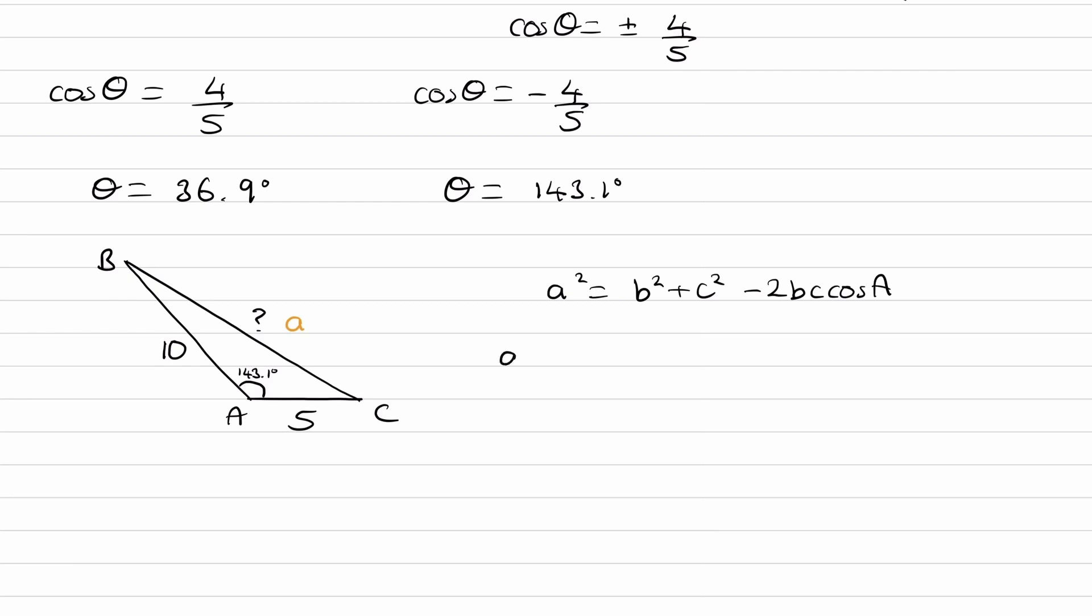Putting everything in: b squared is 5 squared plus c squared, 10 squared, minus 2 lots of 5 times 10 times cos a. Cos of this angle was minus 4 over 5. We want to use the exact value, so put minus 4 over 5 here. We then get 205, so a equals root 205, and that would be our final answer.